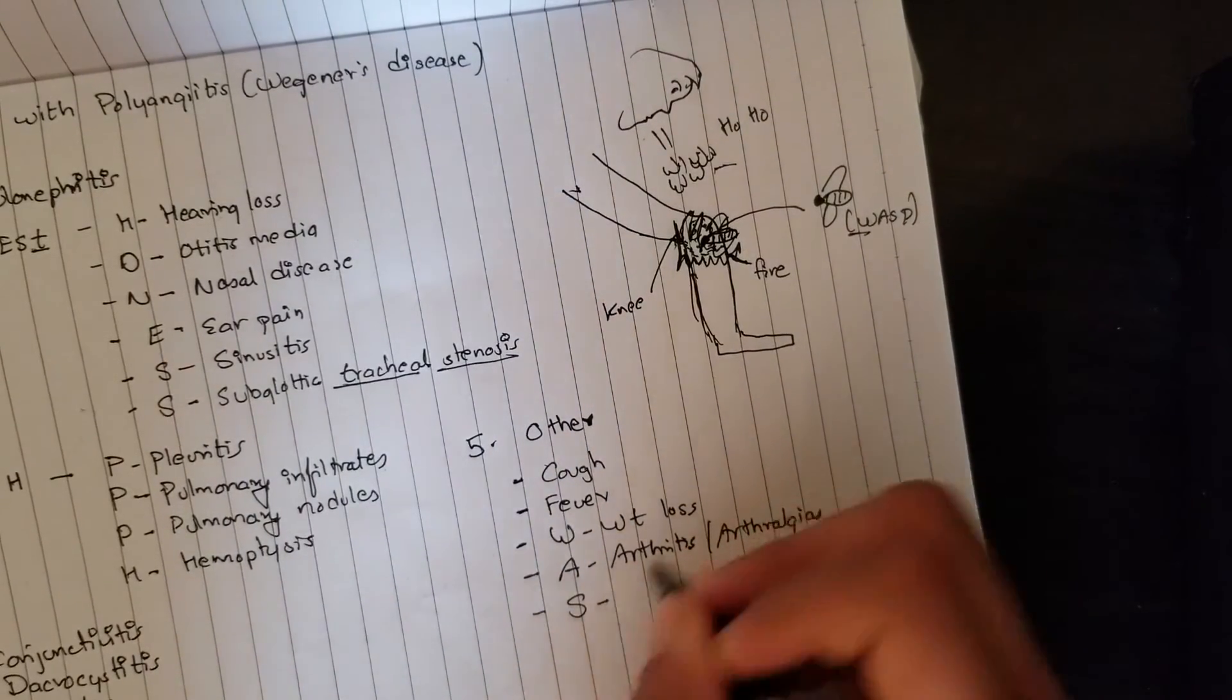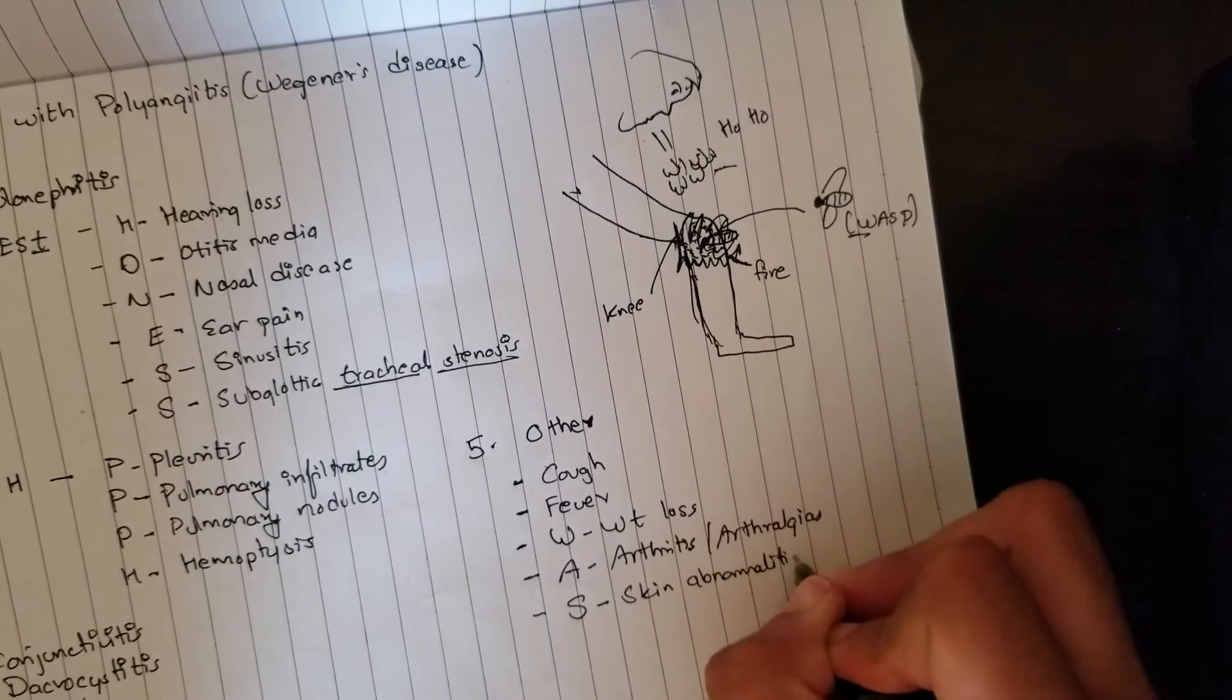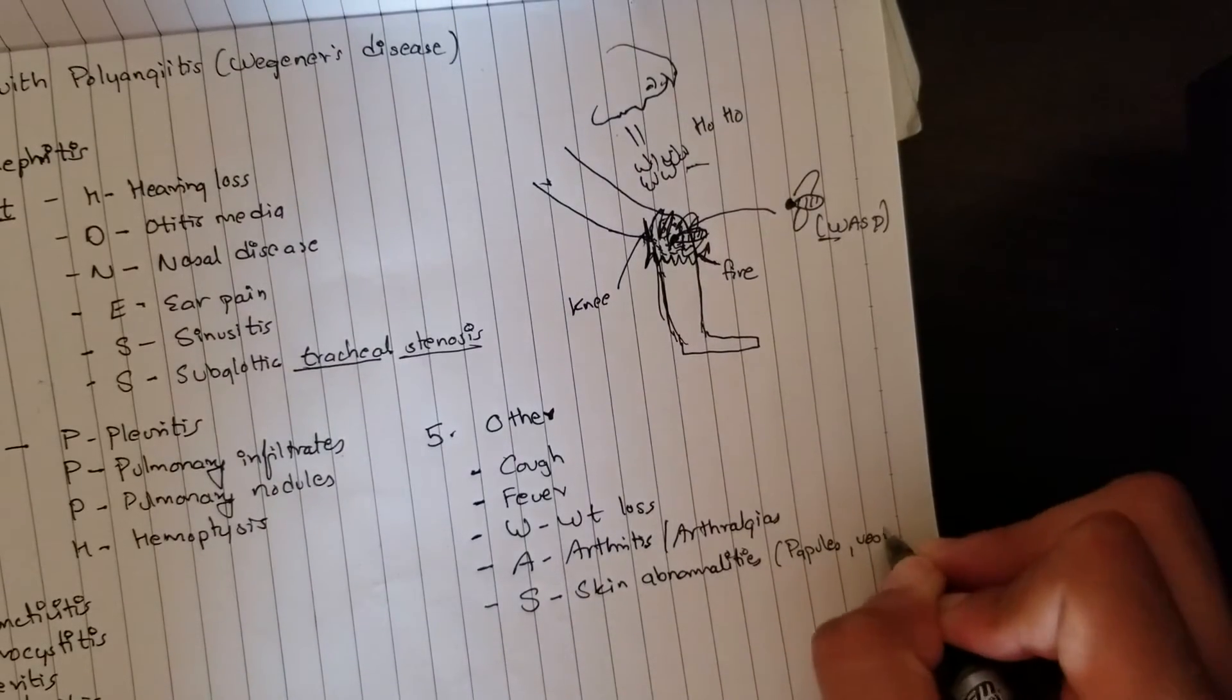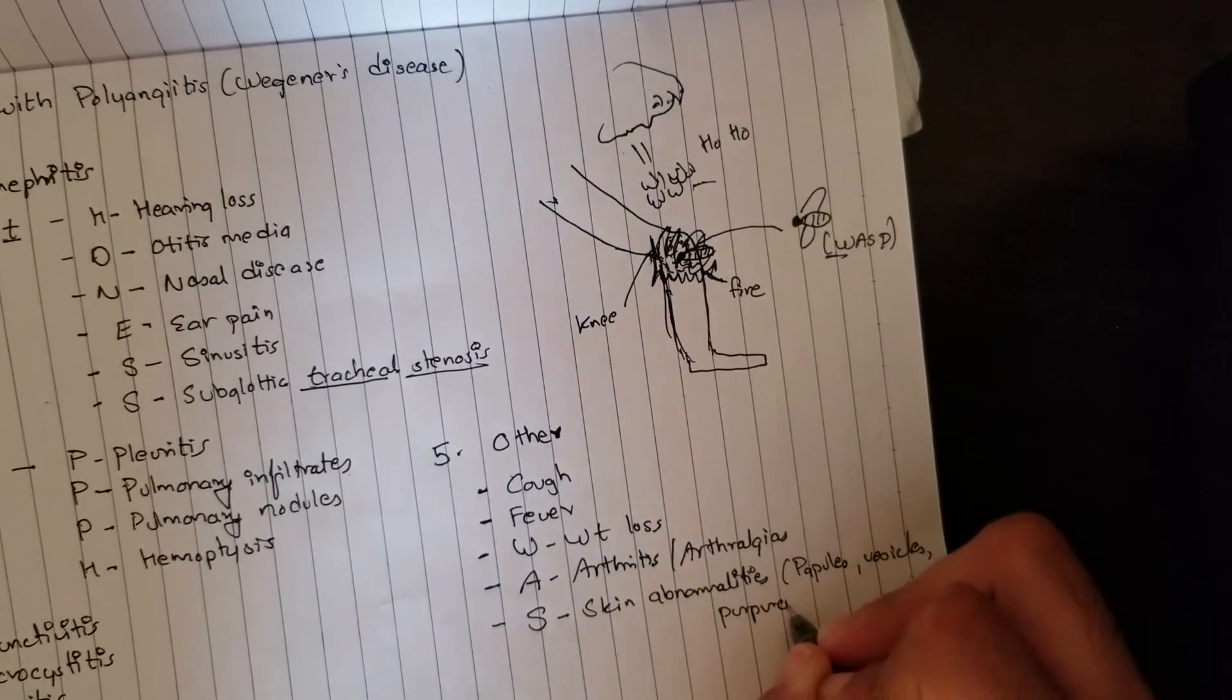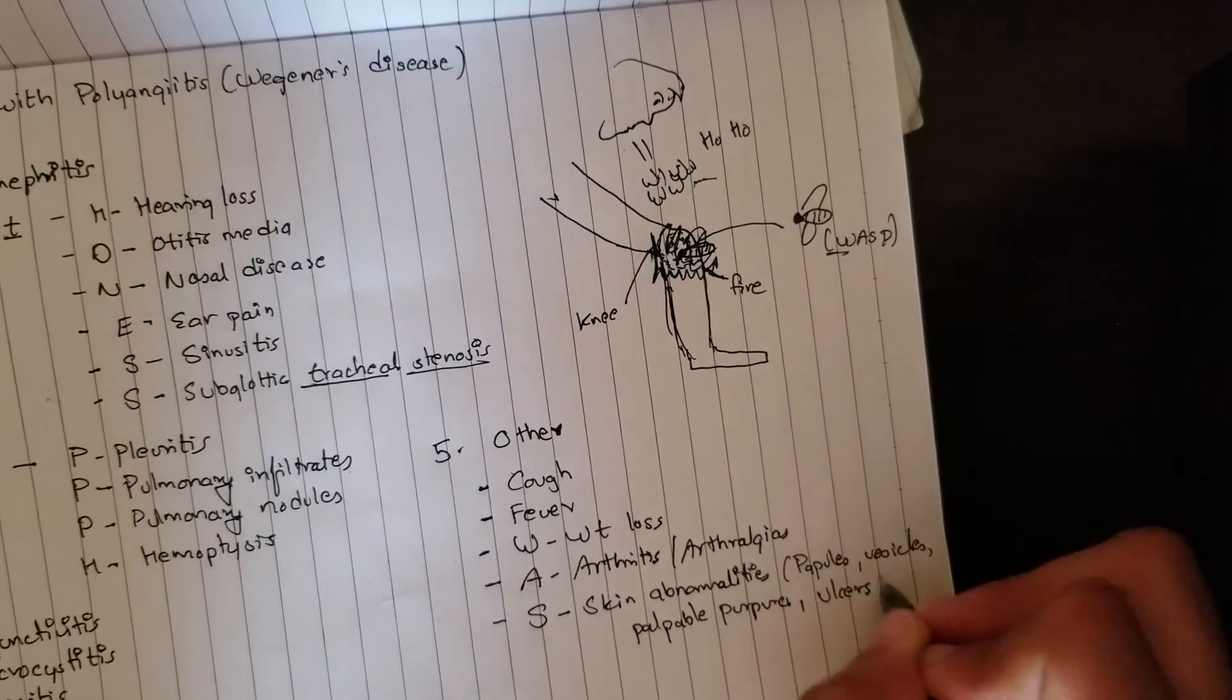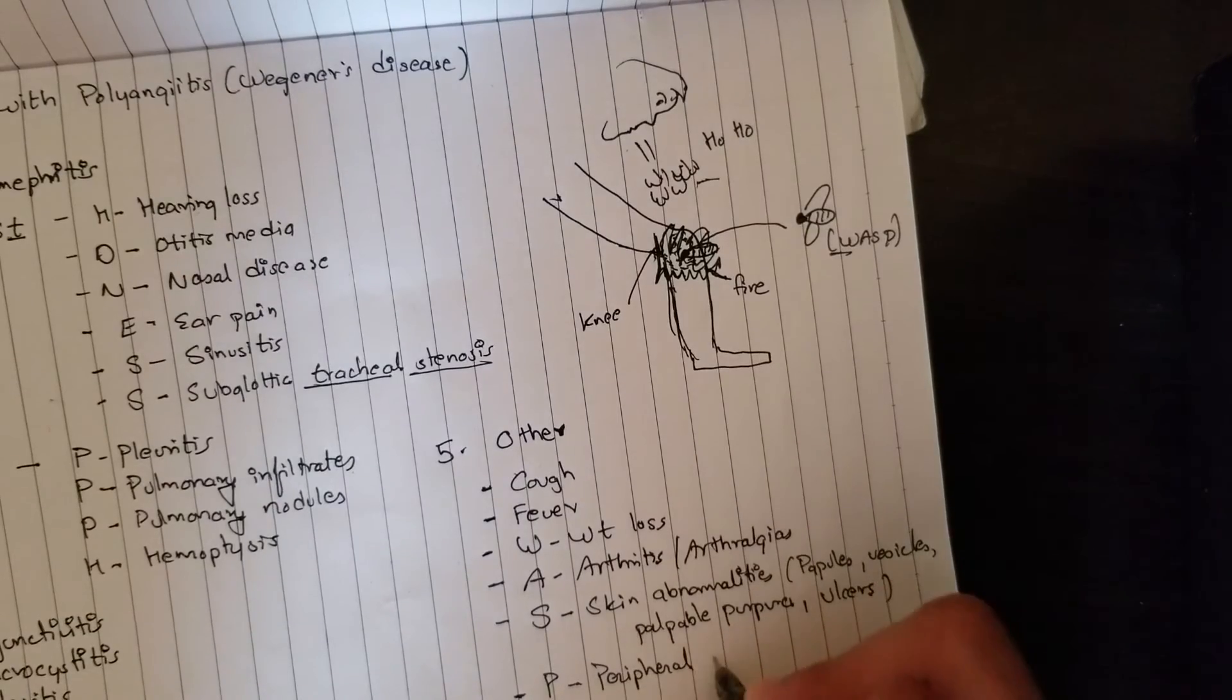S, there is skin covering this joint, so skin abnormalities. What are the skin abnormalities that we can find? We can find papules, vesicles, purpura, actually palpable purpura, ulcers like that. And then at last, P for peripheral neuropathy.